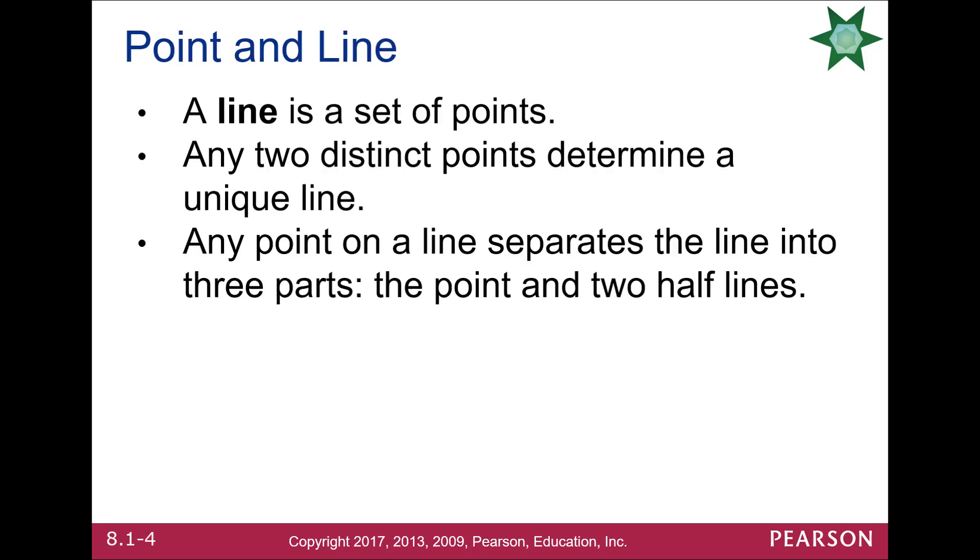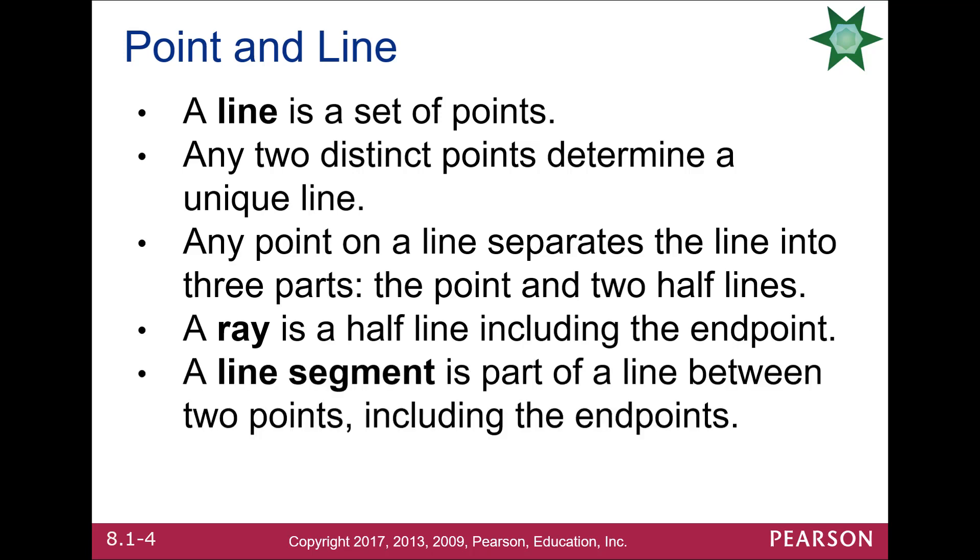A line is a set of points. Any two distinct points, of course, can determine a line. Any point on the line can divide the line into parts, what we call half lines. And if you have a half line with an endpoint, we call it a ray. If you only have a piece of the line, we call it a line segment.